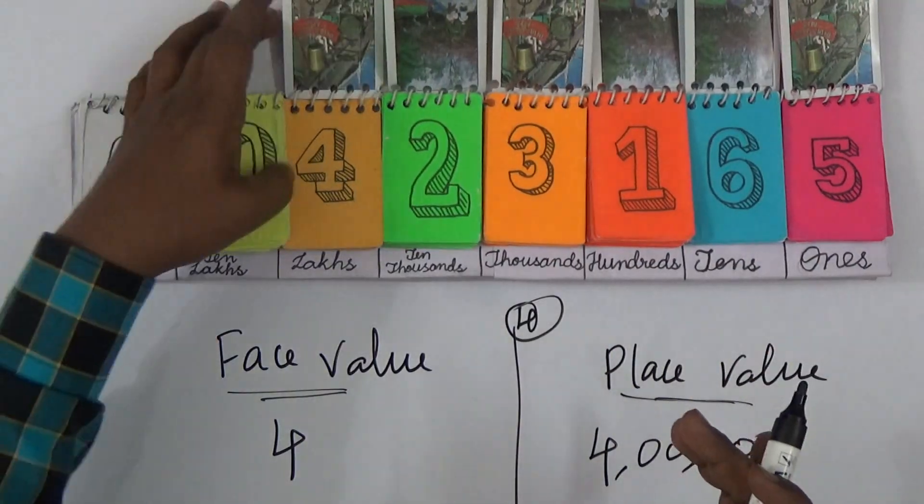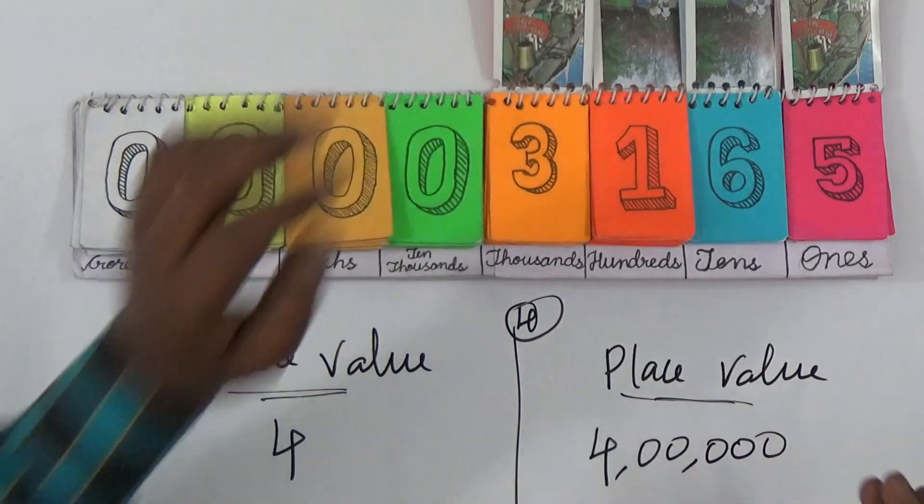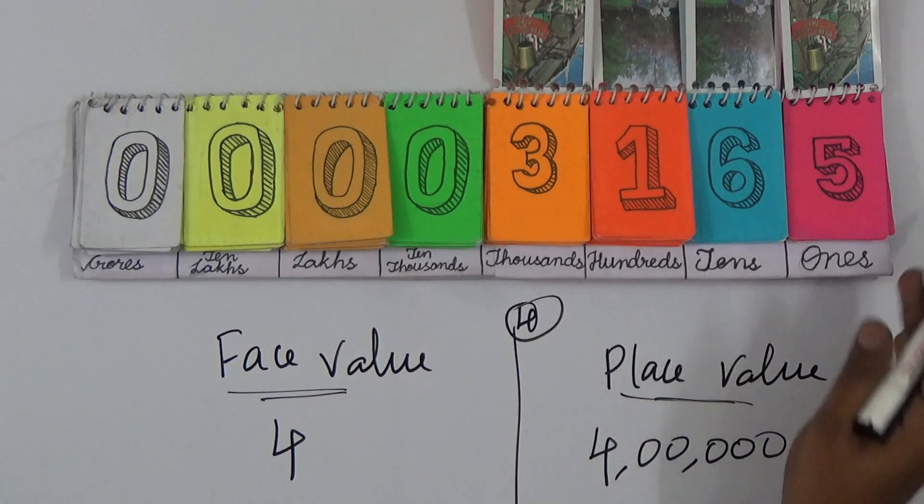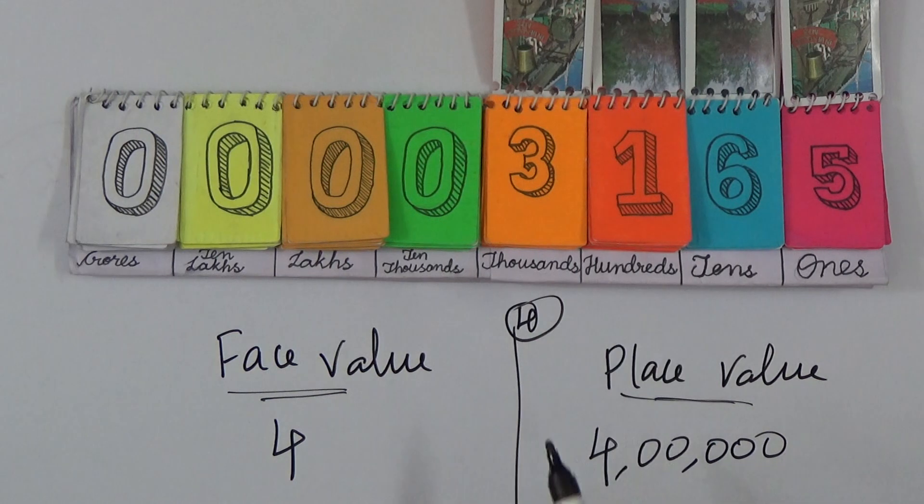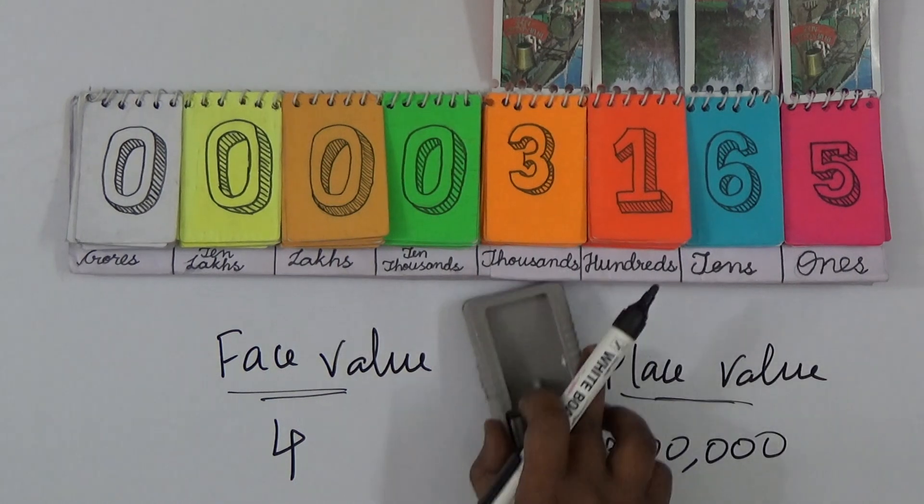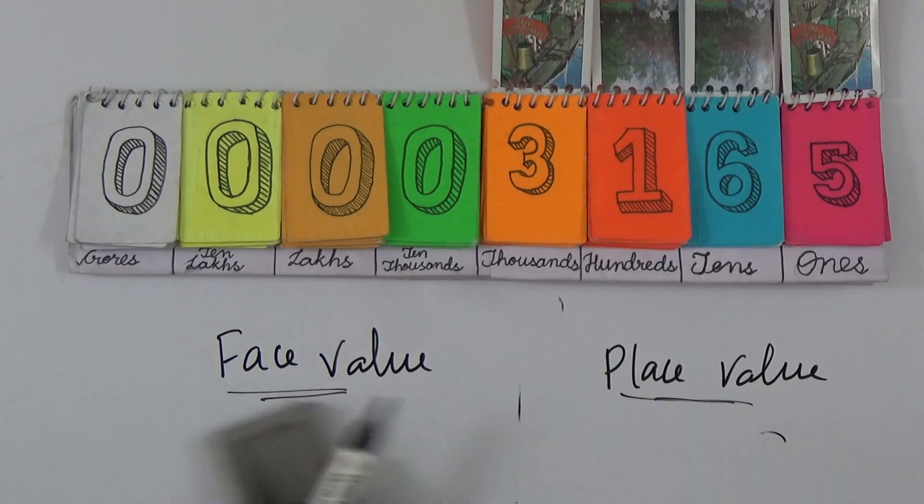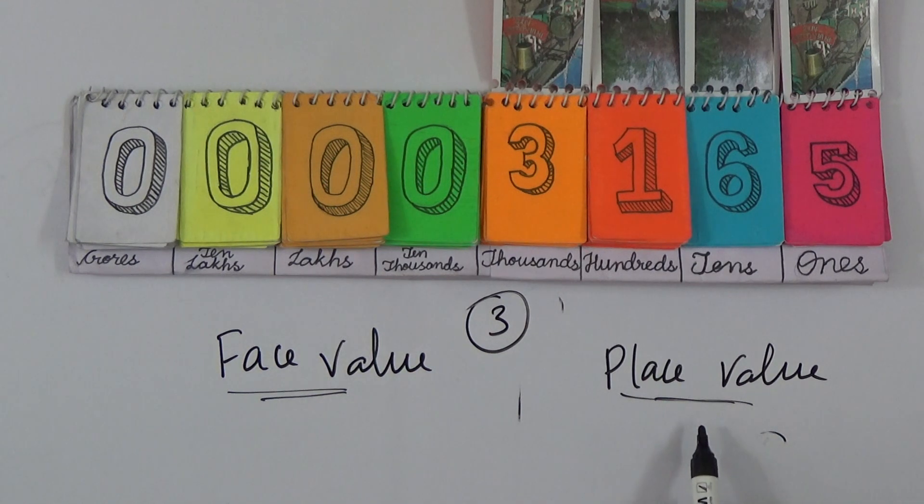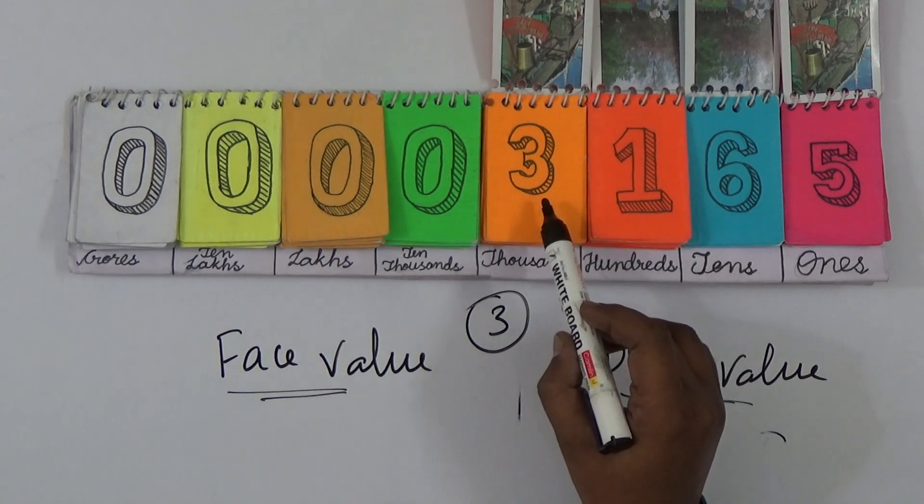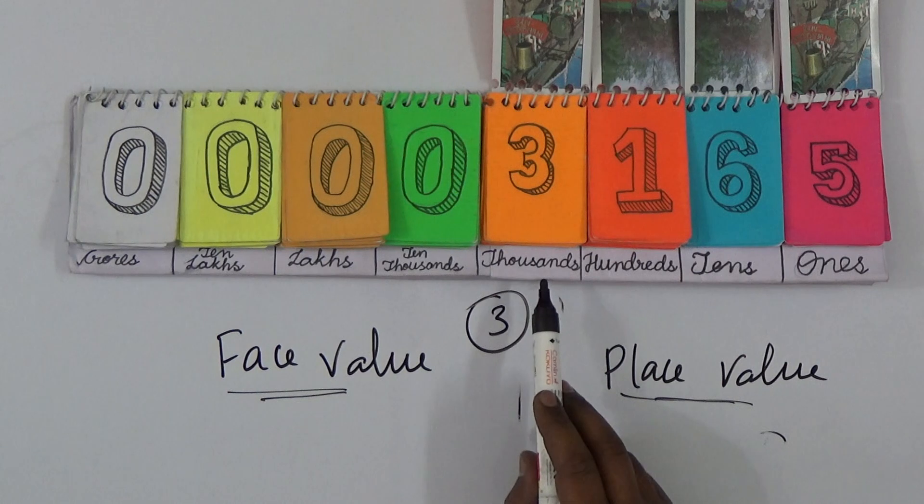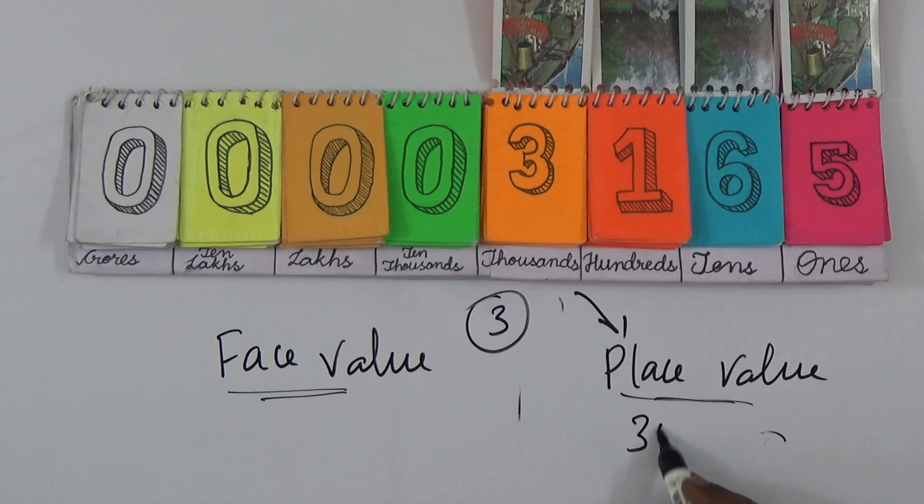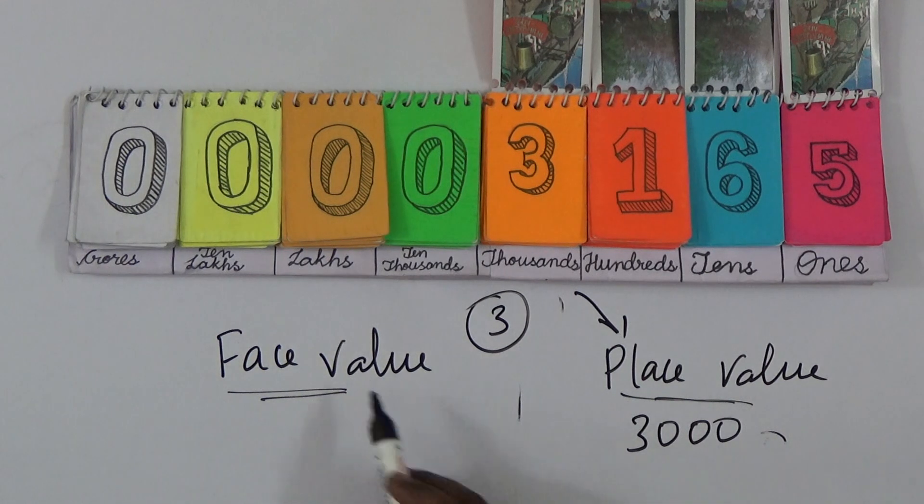Now this number will be 3165. See here, the place value and face value of 3. For number 3, I want to find out face value and place value. So 3 is here for 3 thousands, so 3000 itself is the place value.